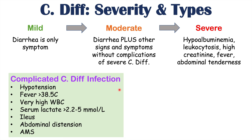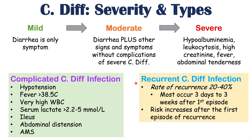Another type is recurrent C. difficile infection — when a patient who has already had an episode has another episode. The rate of recurrence is generally quite high, occurring in 20 to 40% of patients, and often occurs three days to three weeks after the first episode. Having the first recurrence increases the risk of even more C. diff infections later. Understanding this type is important when discussing treatment options.